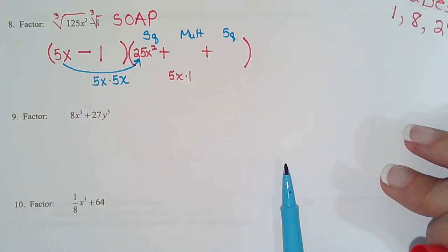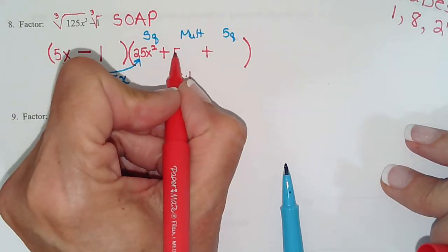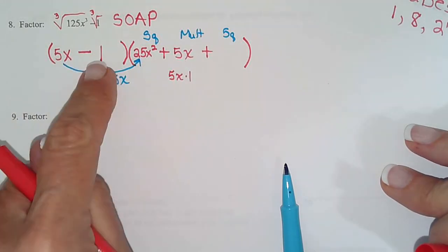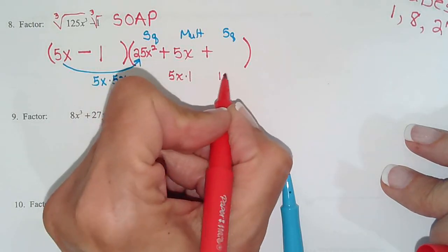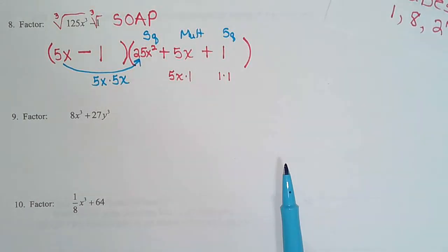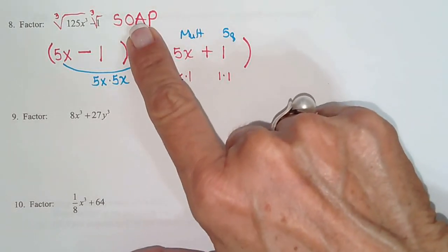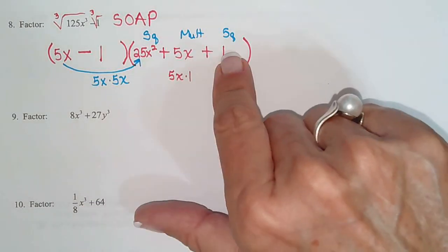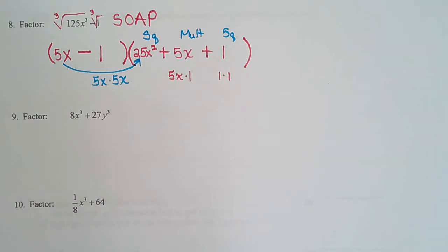So, 5x times 1. 5x times 1 is 5x. Square means take the last term and multiply it by itself. 1 times 1, 1. Done! So, not quite as easy as difference of squares, but not so bad, right? Once you remember the soap and the square multiply square, then really all you have to do is be able to take cube roots.